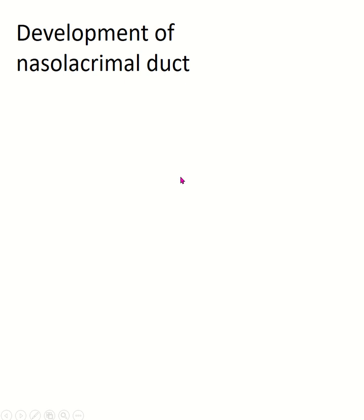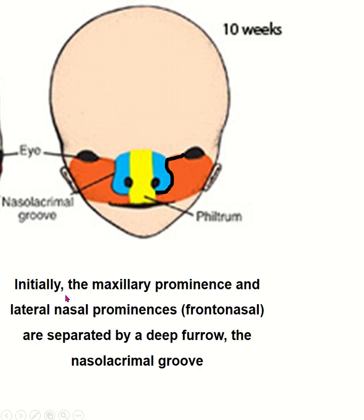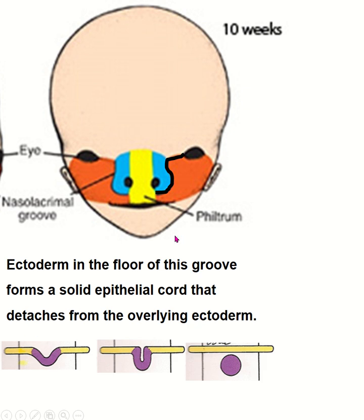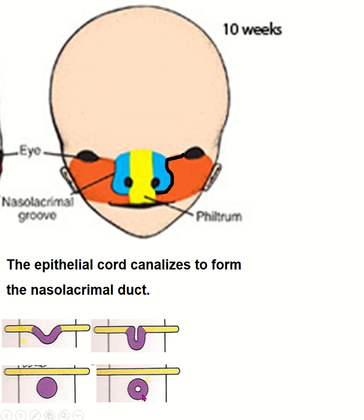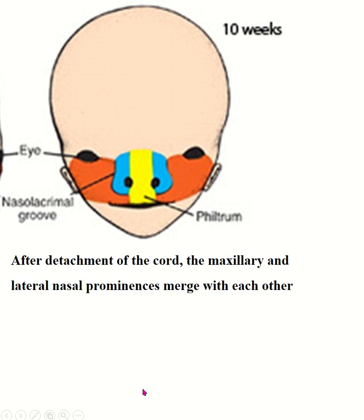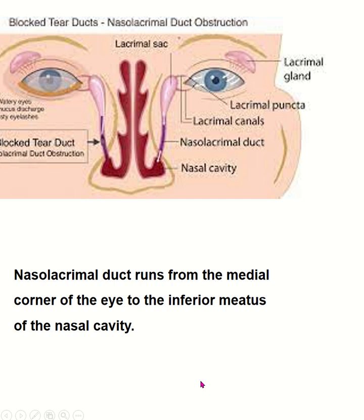Now, the development of the nasolacrimal duct. Initially, the maxillary prominence and lateral nasal prominence are separated by a deep furrow — the nasolacrimal groove. The ectoderm in the floor of this groove forms a solid epithelial cord that detaches from the overlying ectoderm. The epithelial cord canalizes to form the nasolacrimal duct. After detachment of the cord, the maxillary prominence and lateral nasal prominence merge with each other. The lacrimal duct forms from the medial corner of the eye to the inferior meatus of the nasal cavity.